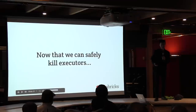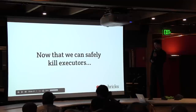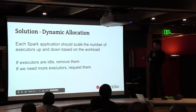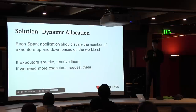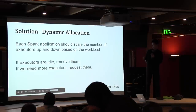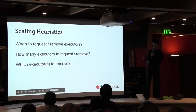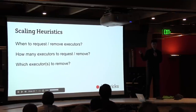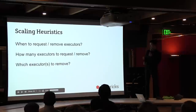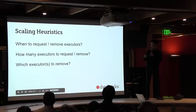Now that we can safely kill executors, let's go back to complete our story. When executors are idle, we kill them; when we need more executors, we request them. To understand the details, we need to answer three questions: When do we request executors? When do we kill them? And how many executors do we add or remove each time?